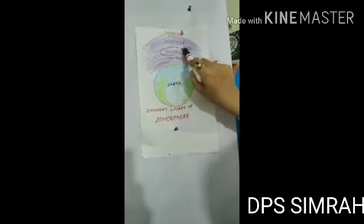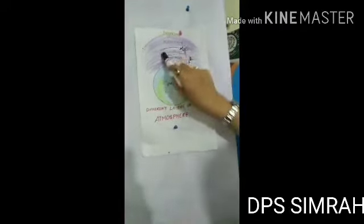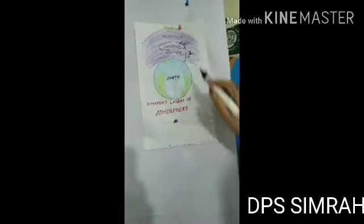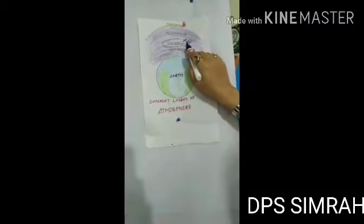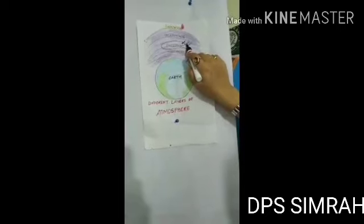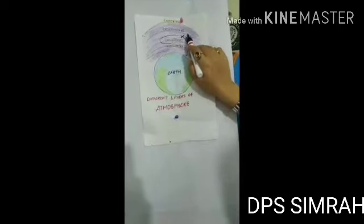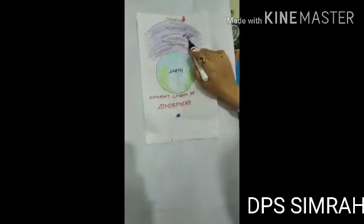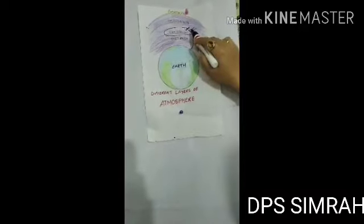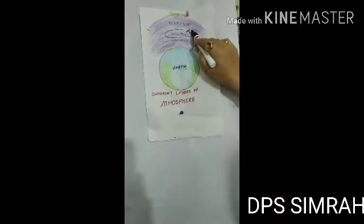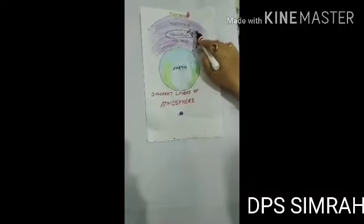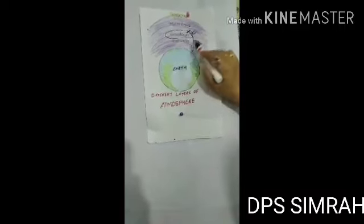Stratosphere is a layer of the earth's atmosphere which helps us. It is a very thin layer of the atmosphere, but it is very helpful for our earth because it protects us from the harmful ultraviolet rays of the sun.